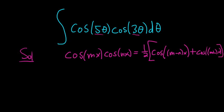So here all we have to do is use the identity and integrate. So let's do it. So this is the integral. This will be 1 half bracket cosine. And let's see.